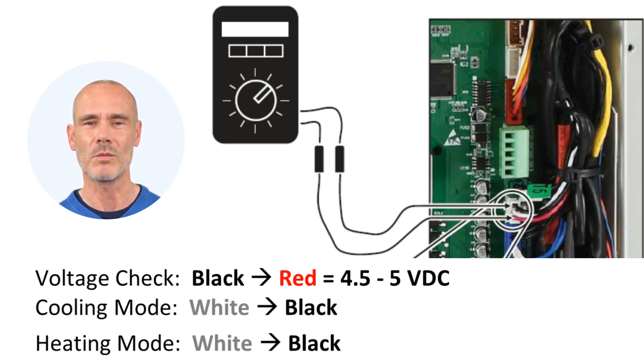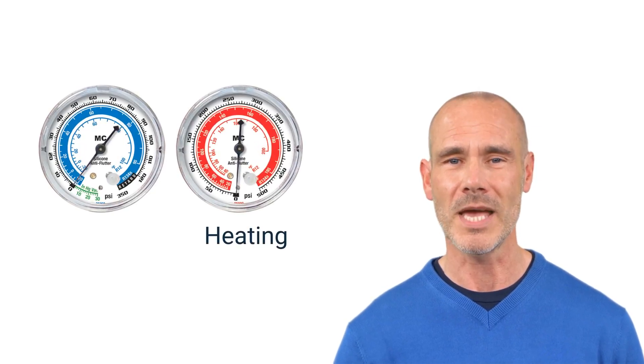Next, read across the white and black wires to get your operational value. You can check the transducer in either heating or cooling. Heating will be tested on the high side and cooling will be tested on the low side.